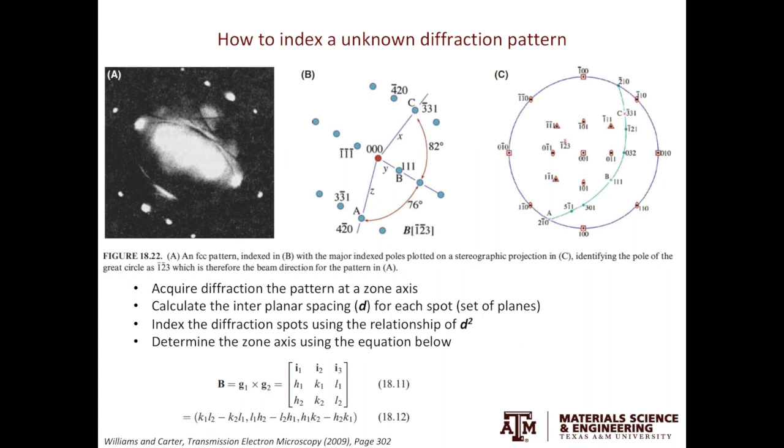We have G1 and G2 on the same plane. And what we're looking for is a vector that's perpendicular to the plane defined by G1 and G2. You get G1 and G2 from indexing, which we just talked about. G1 cross G2, the cross product, will be the zone axis of your crystal.